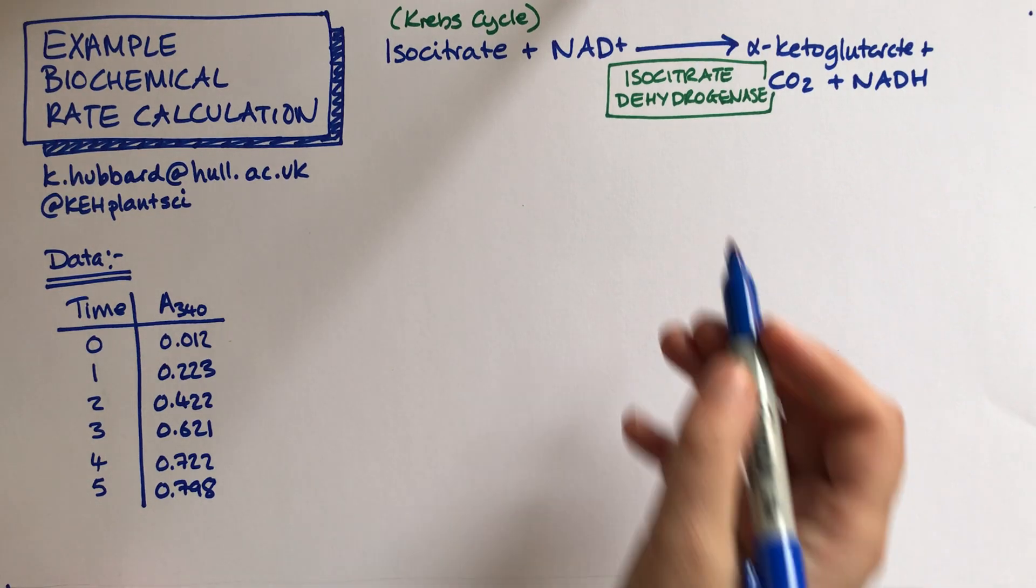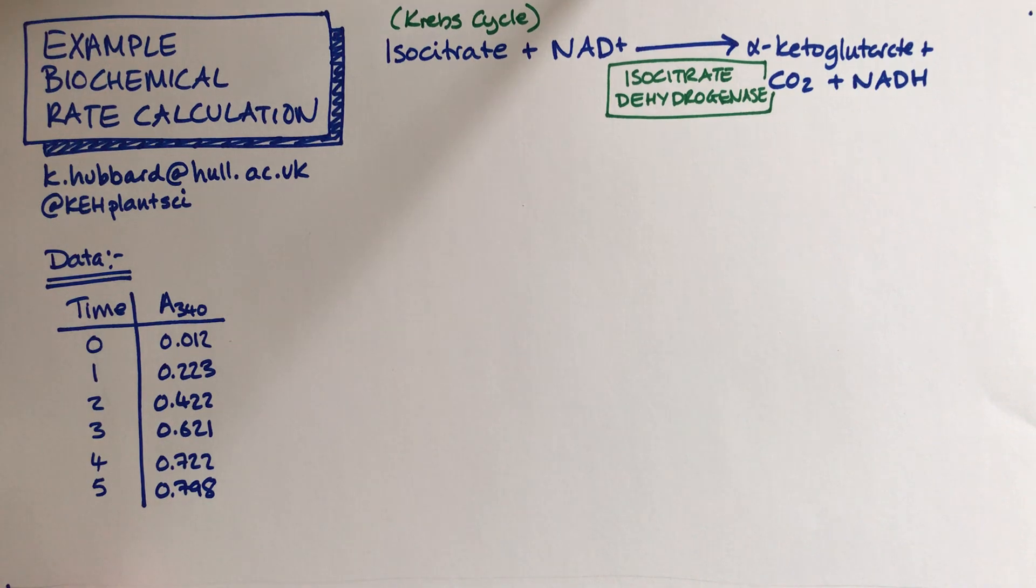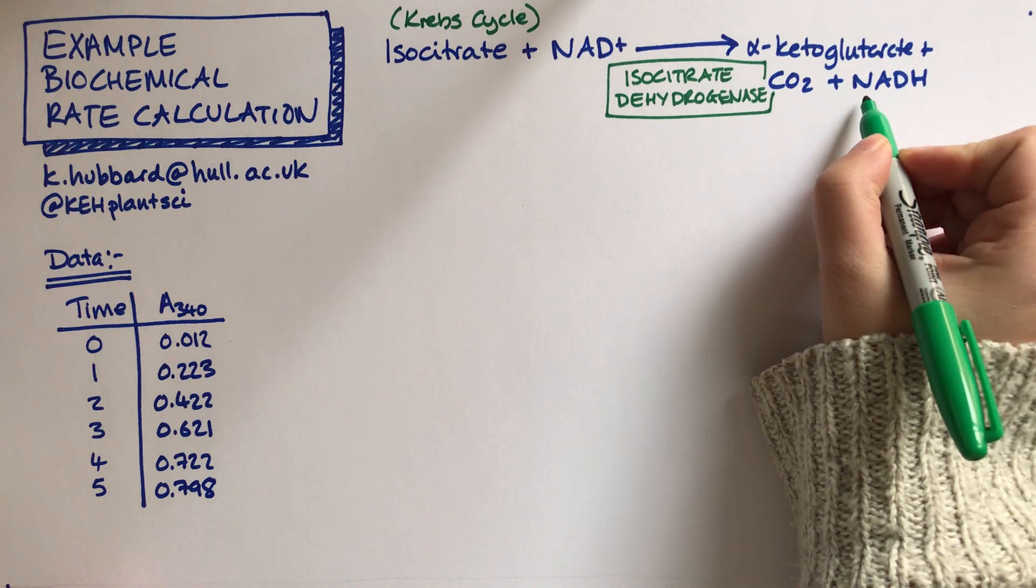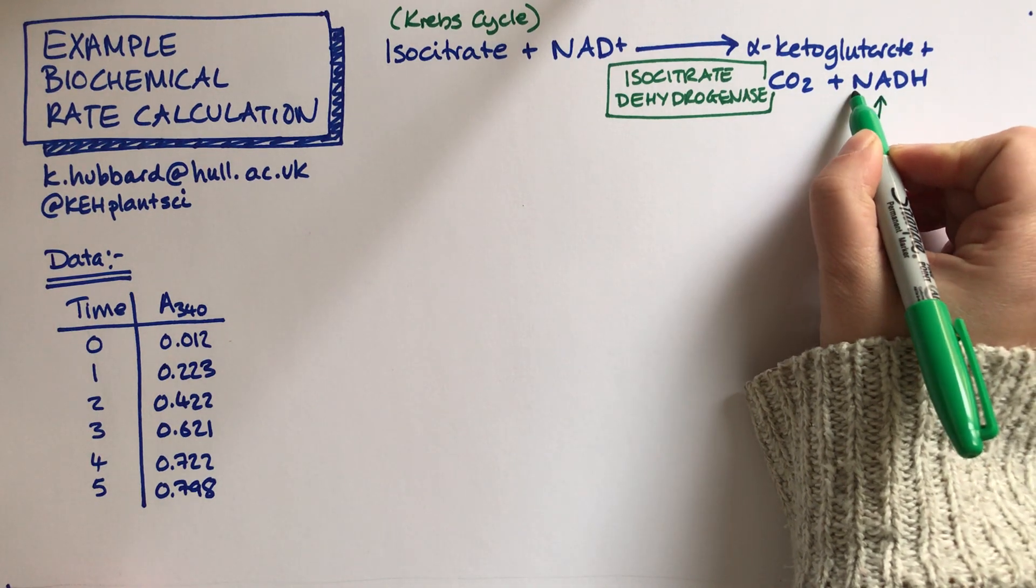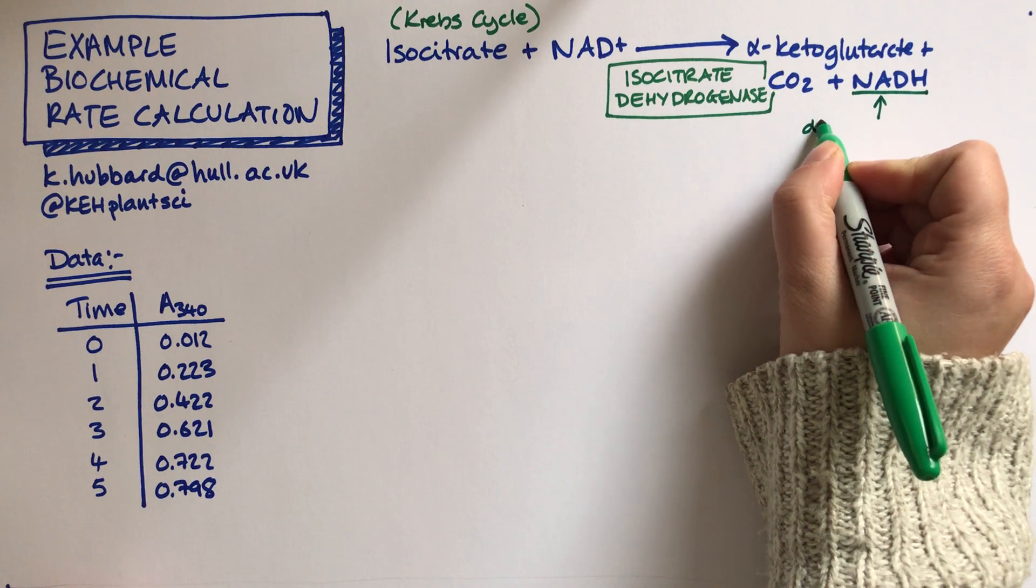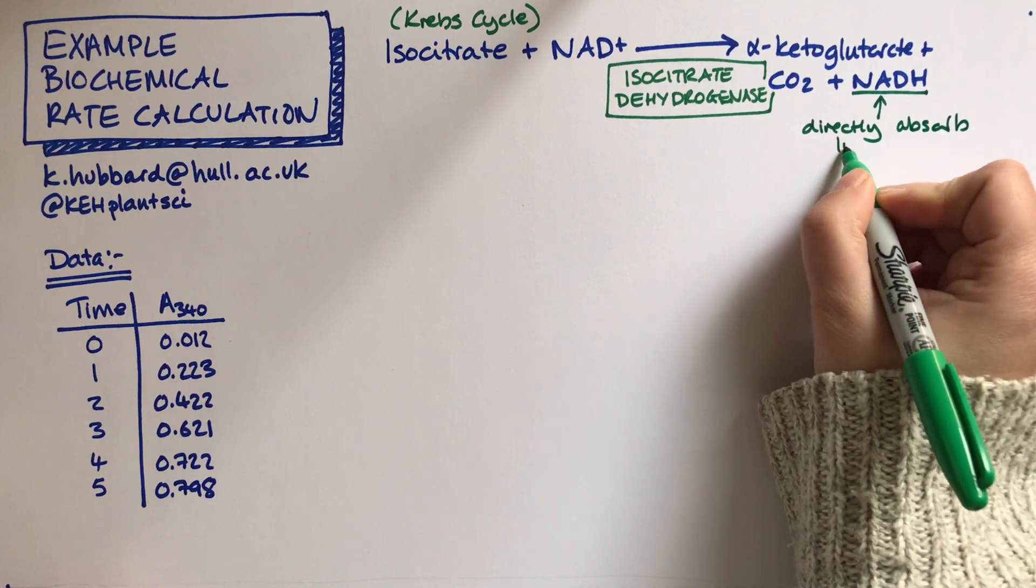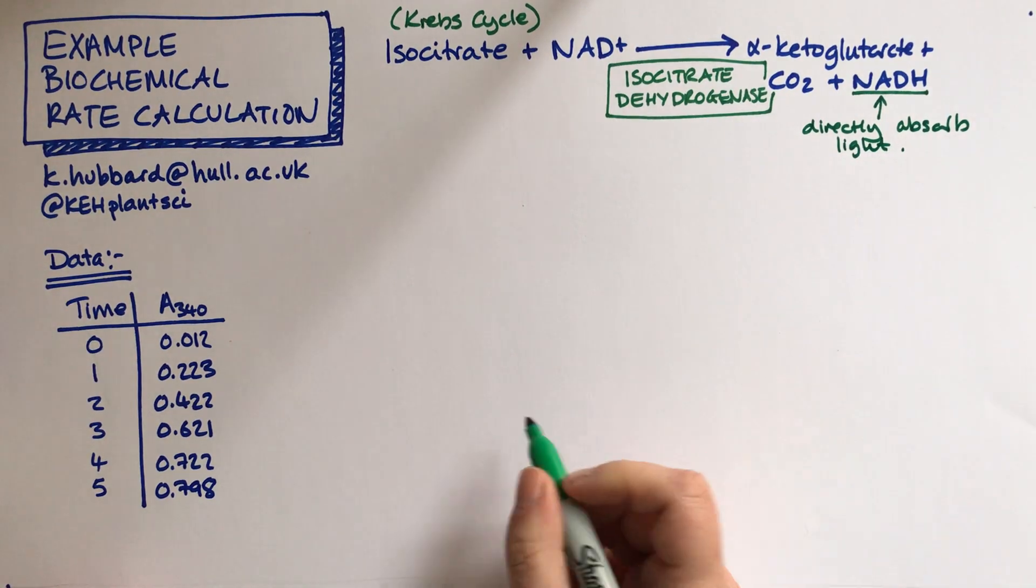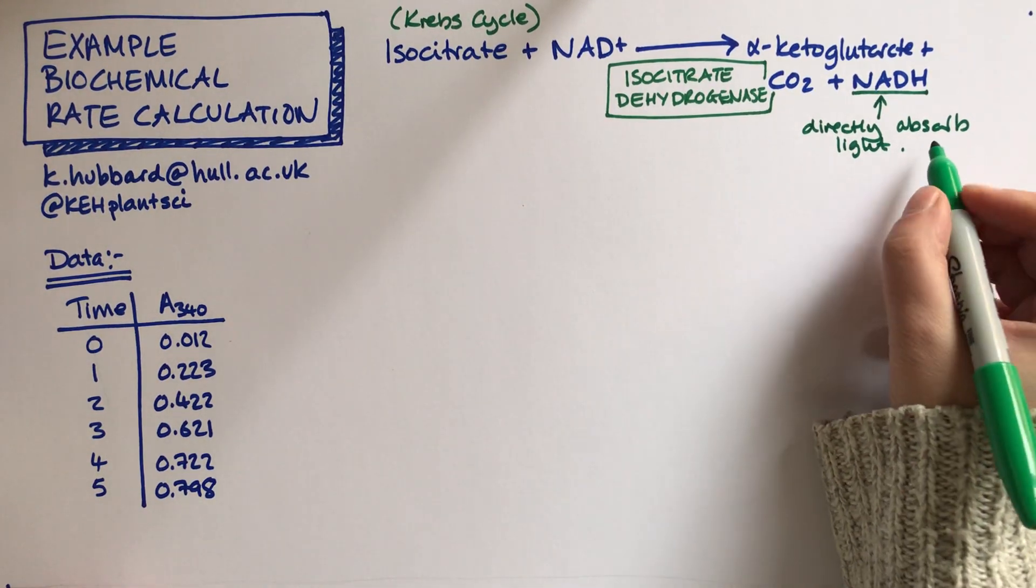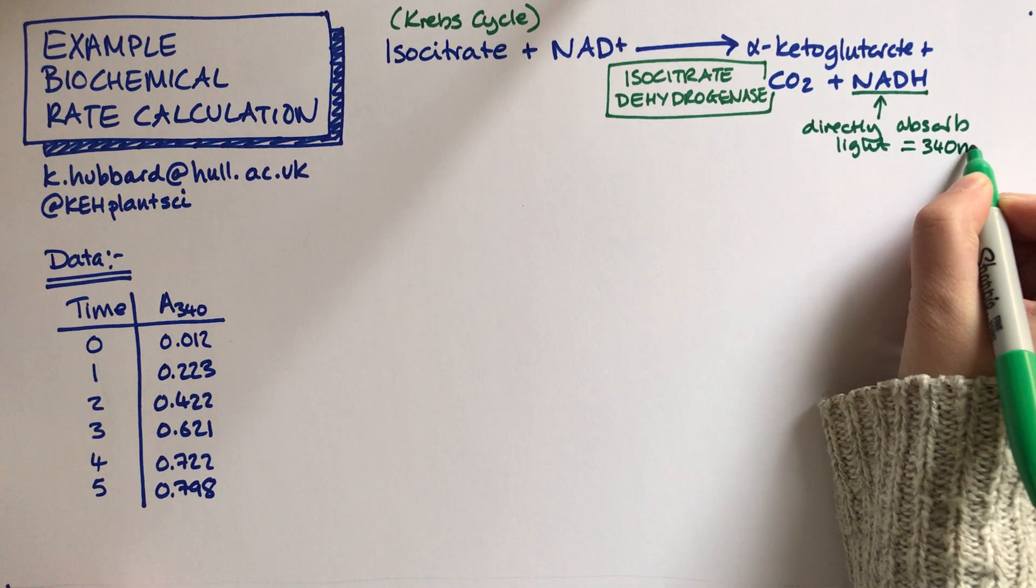That's the reaction that the enzyme is catalyzing and that makes it a relatively straightforward enzyme to quantify its rate because it produces NADH and NADH is able to directly absorb light. The best wavelength to measure it at is at 340 nanometers.